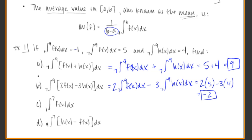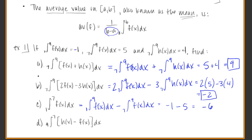Using our properties further: we want to find the definite integral from 1 to 7 of f dx. We know the integral from 1 to 9 and from 7 to 9. So if we take the integral from 1 to 9 of f dx and subtract the integral from 7 to 9 of f dx, that leaves us exactly with the integral from 1 to 7. That's negative 1 minus 5, giving negative 6.